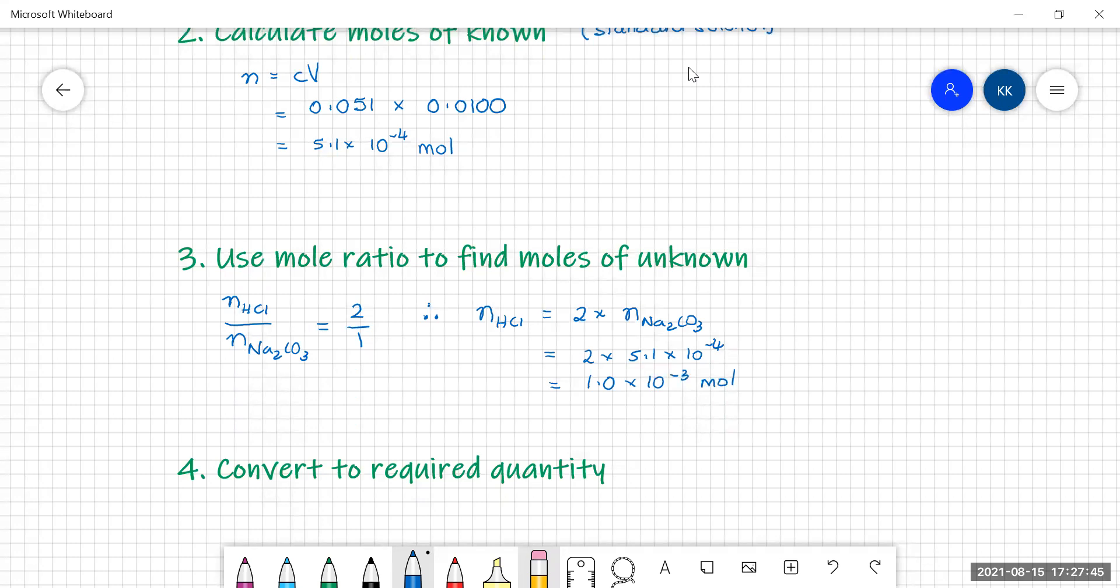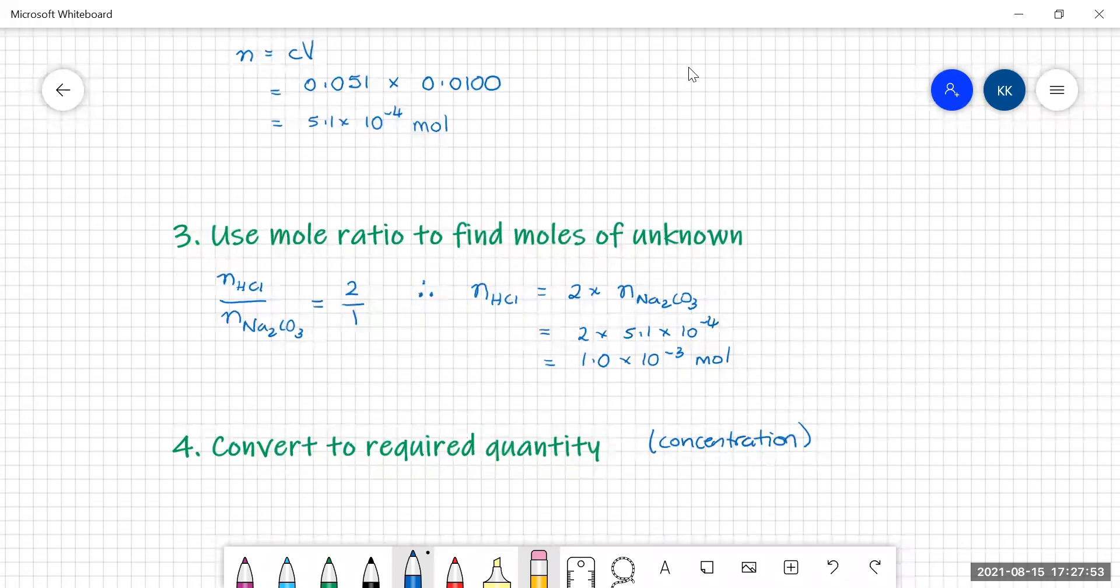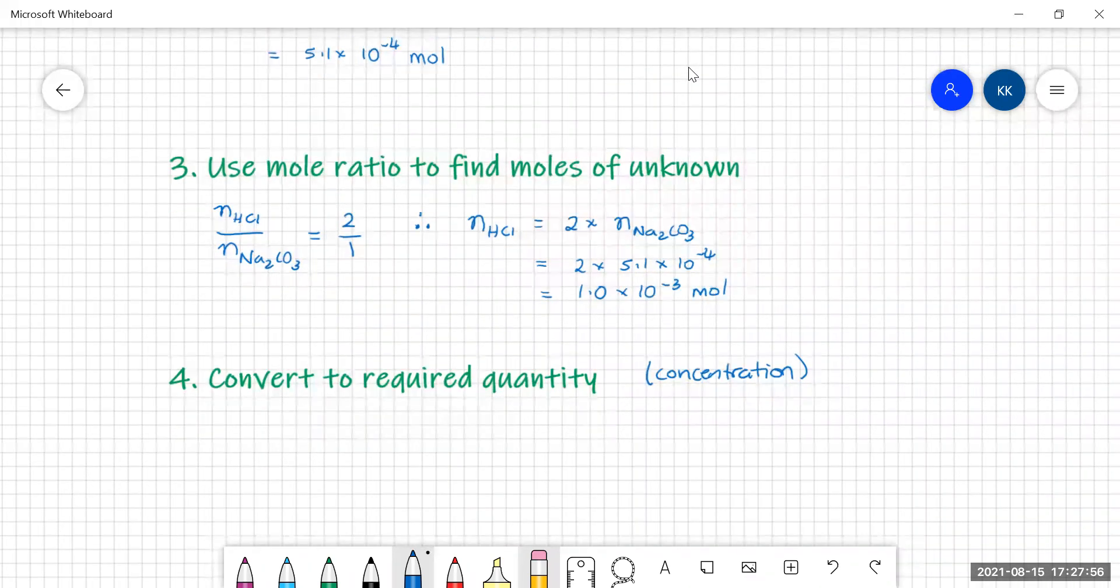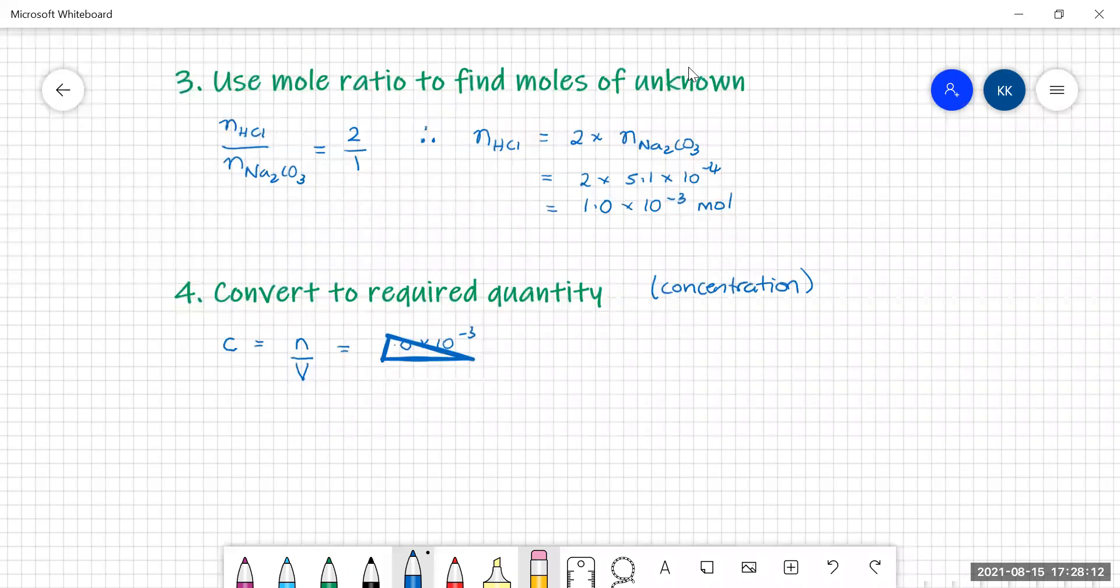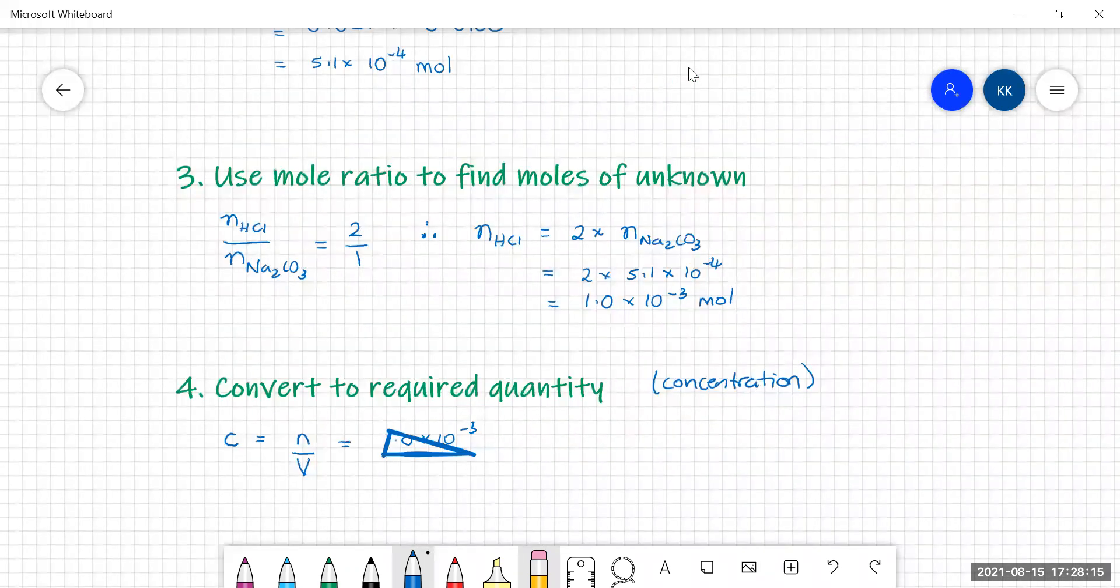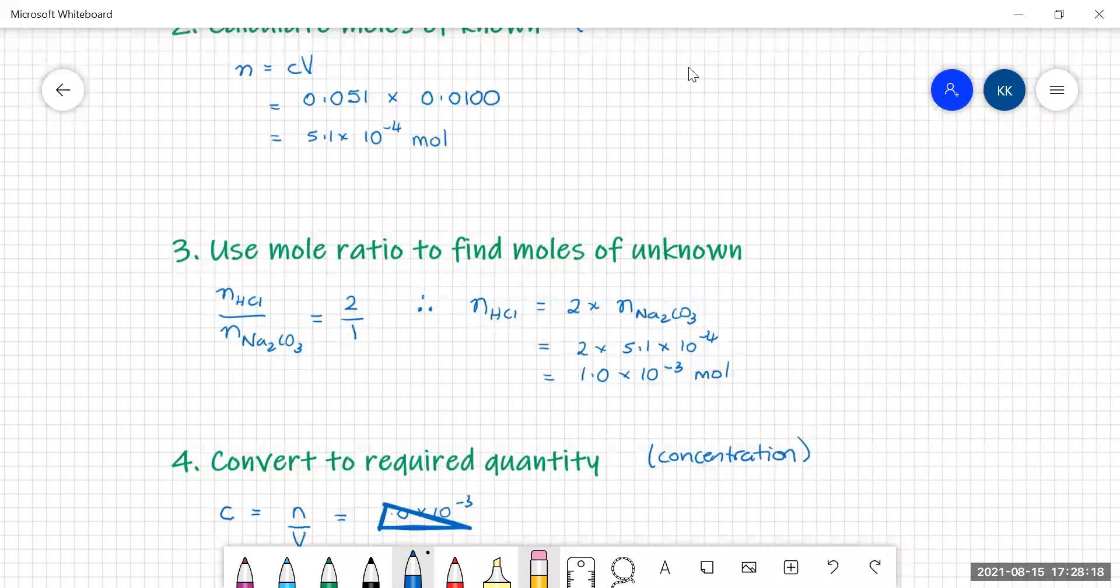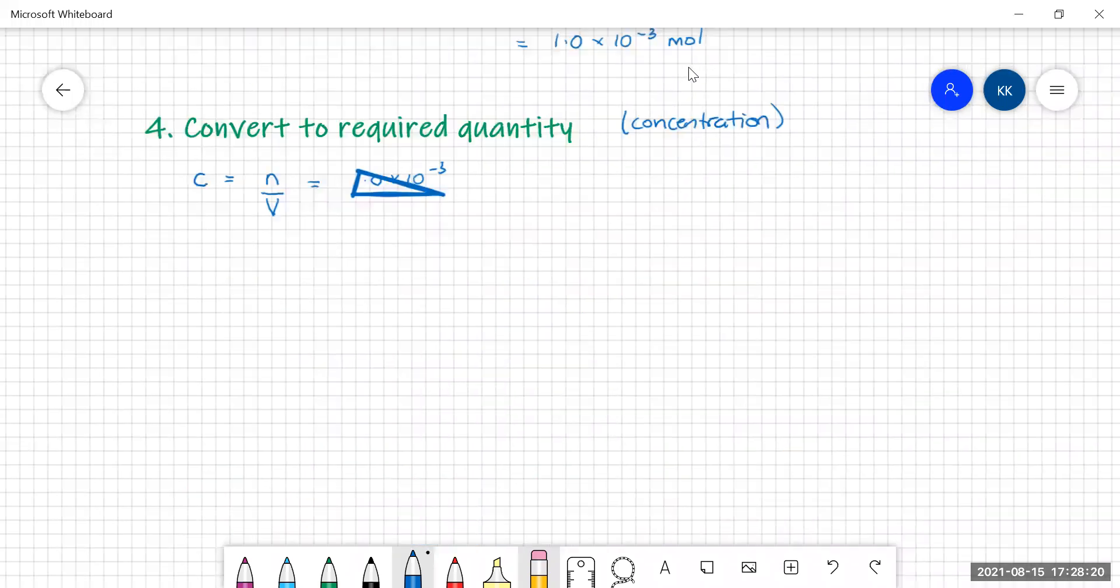Final step, we're going to convert to the required quantity. And in our case, this is concentration. So we've got our moles of hydrochloric acid, we know our volume of hydrochloric acid, that's our average titer, we need to find the concentration, which is moles over volume. So our moles is 1.0 times 10 to the minus 3. And our volume, don't forget to put it in litres, is 10.49 mils, 0.01049 litres.